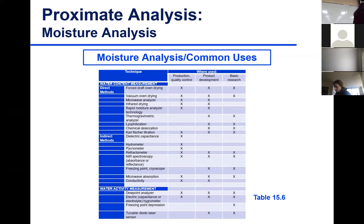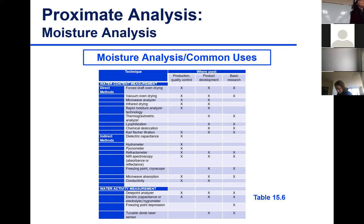Table 15.6 summarizes direct methods, indirect methods, and water activity measurements, and tells you where each is used — for production, quality control, product development, research and development, and basic research. It's a really good summary table.